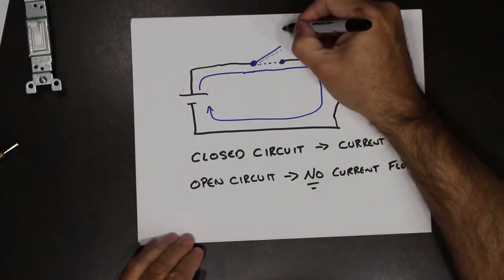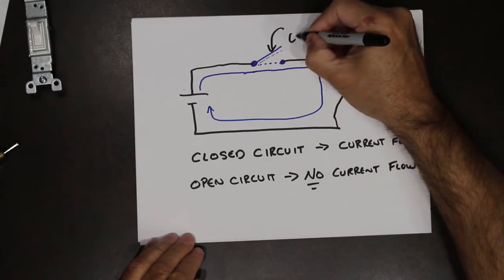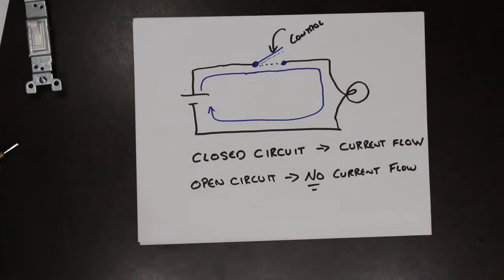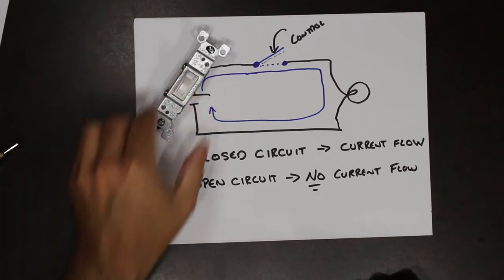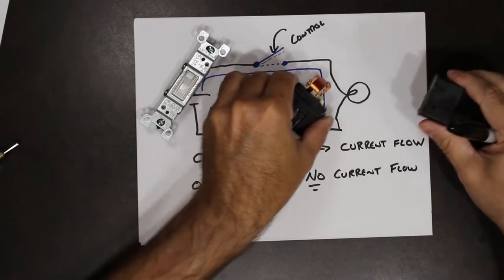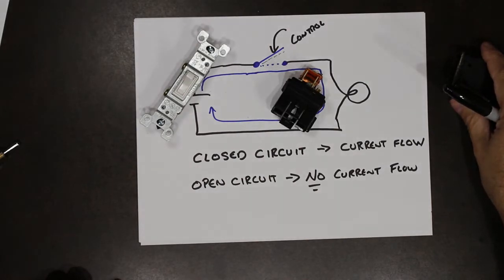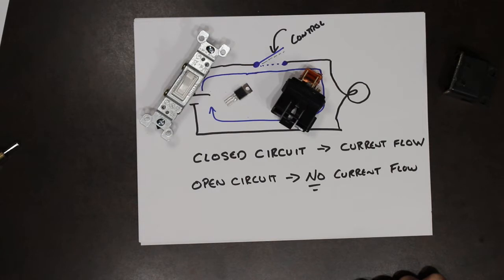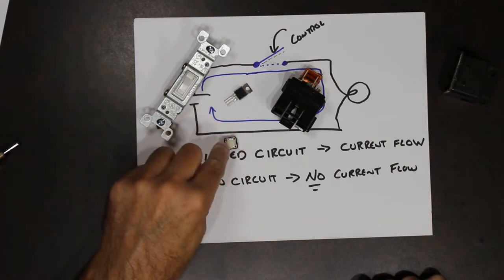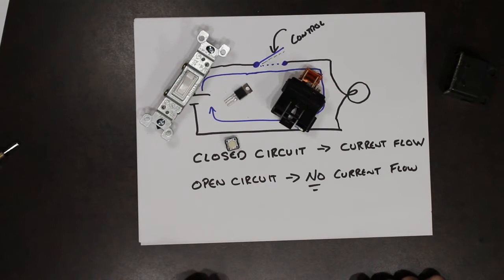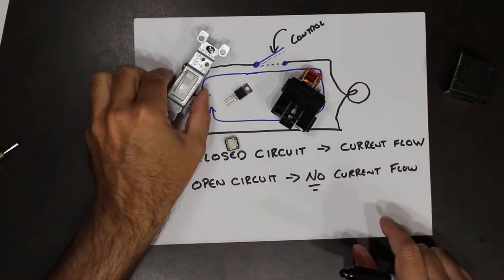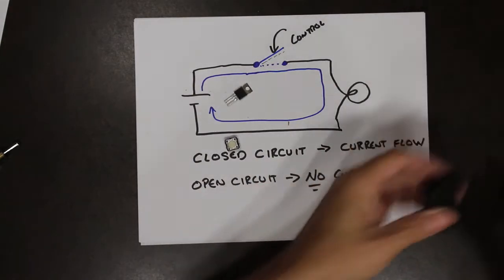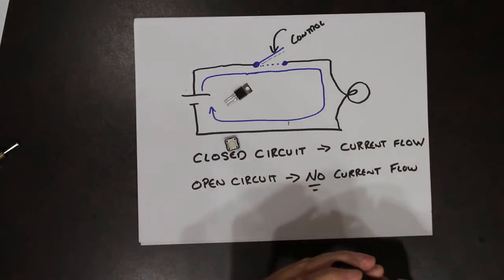Again, there are many types of control devices. It could be a simple switch, a relay, something solid state, or a push button. But the idea is to be able to control the flow of electricity in a circuit.